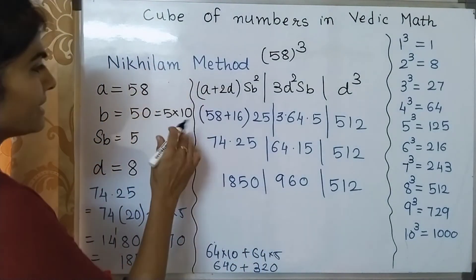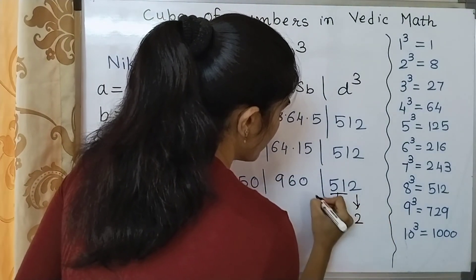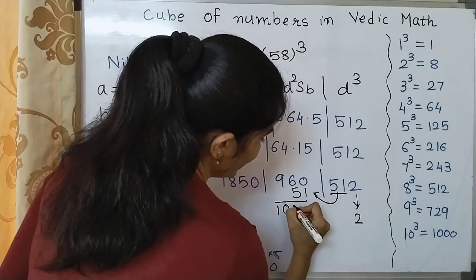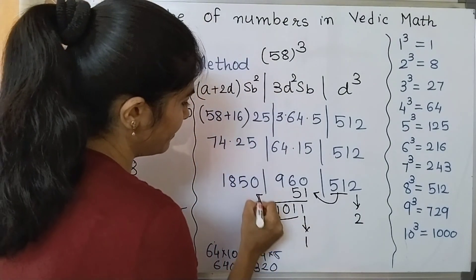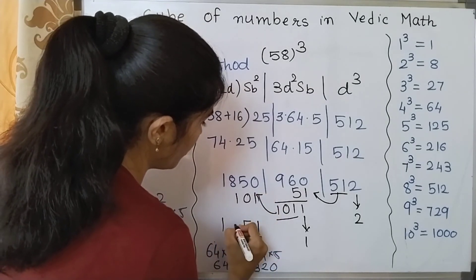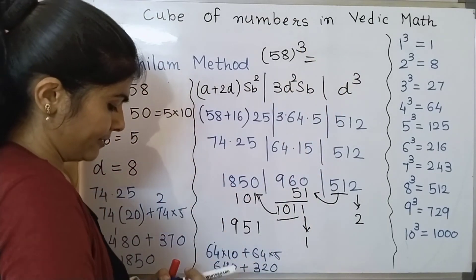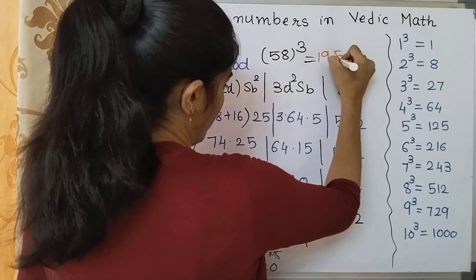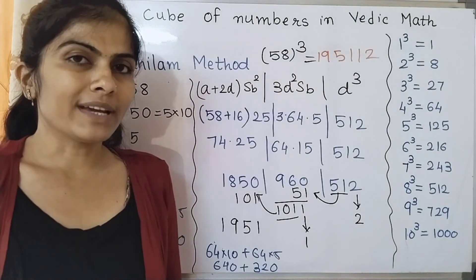Now if we do last step, my base is multiple of 10 so I should take this one digit down. So this 2 goes down, 51 goes as carry, so this will become 1011. So I will bring this 1 down and I will take these as carry. So if we add 1, 1, 1, 0, and 1, 1 is going to be added. So 1, 5, 9, and 1. So cube is I can say that 195112.